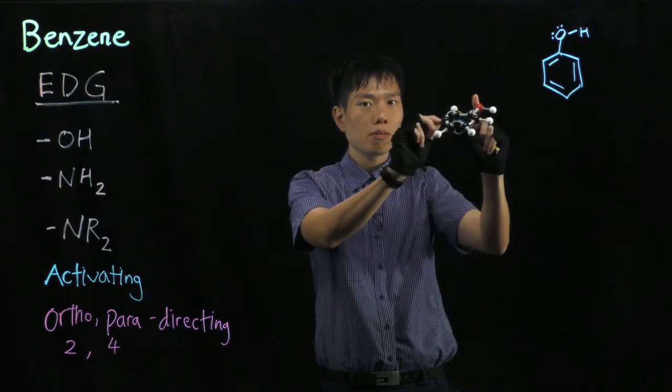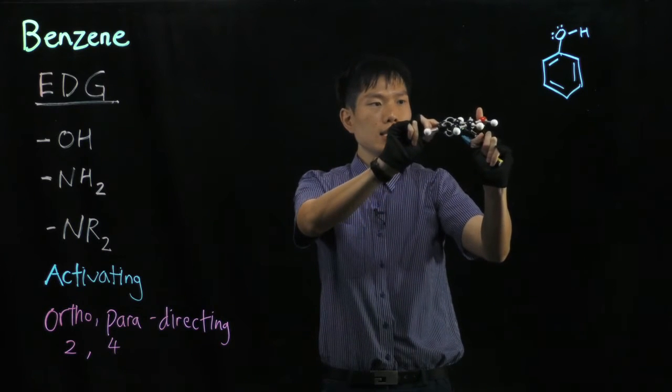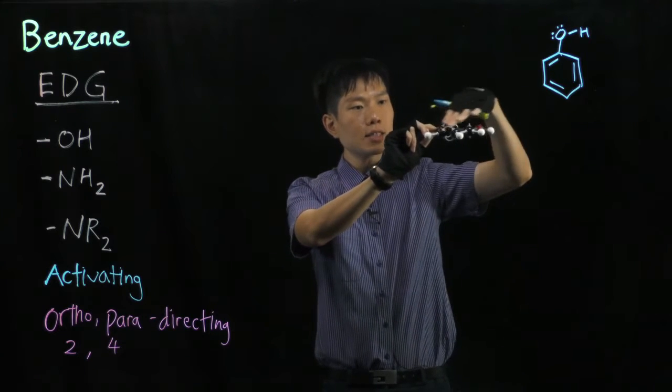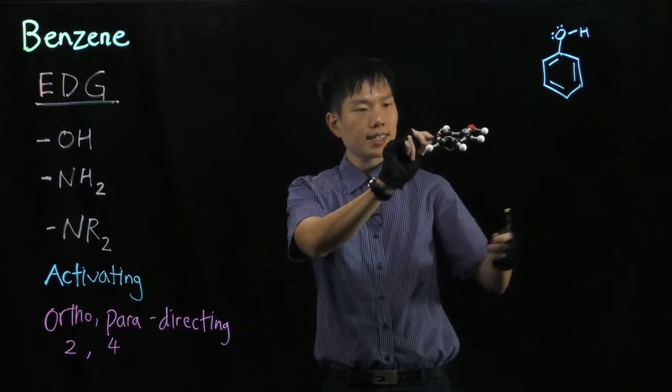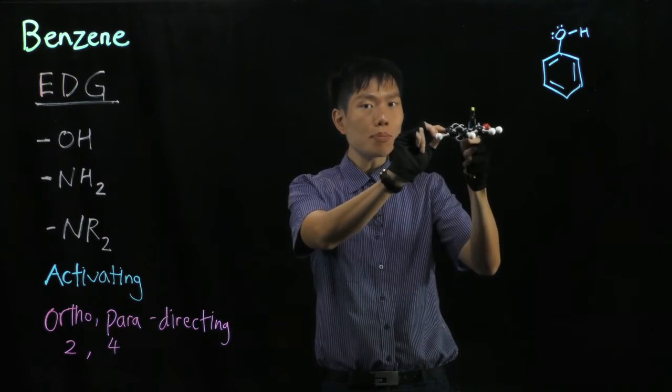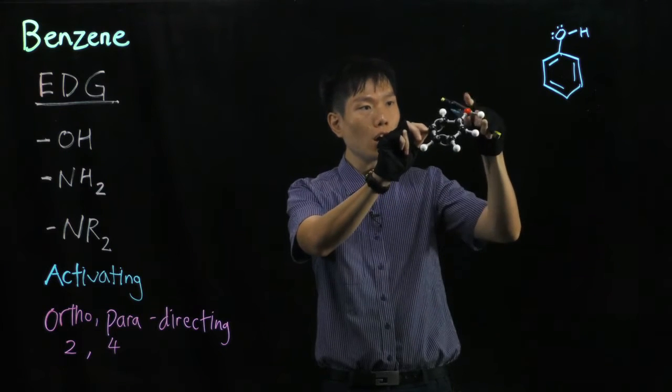And if I position it this way, what I realize is, it is upright. And we notice that inside this plane here, of the benzene ring, is actually the p orbitals above and below it. So there's an orbital overlap between the lone pair on this